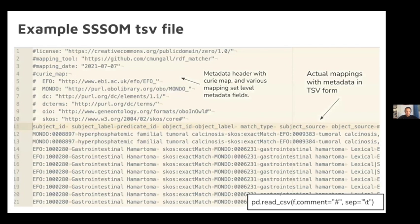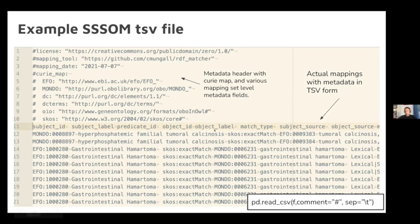The canonical representation in SSSOM is a TSV file with two parts: a header section with metadata attached using comments, and then a main body which is a regular TSV with items like subject ID, predicate — using SKOS exactMatch — and subject source. Files like this can easily be read even with standard Python toolkits like Pandas using the comment option.